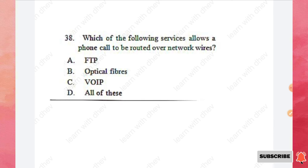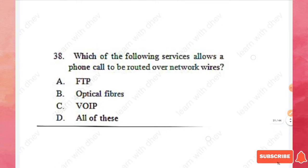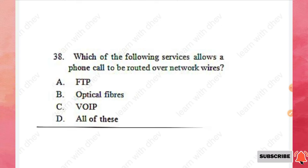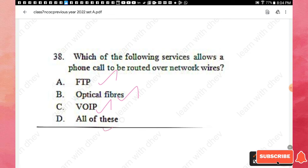Question 38: Which service allows your phone calls to be routed over network wires? Options are: FTP (File Transfer Protocol), optical fibers, Voice over Internet Protocol, or all of these. The right answer is option C — Voice over Internet Protocol (VoIP).